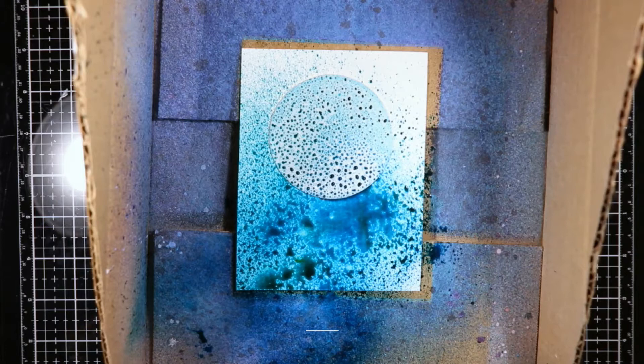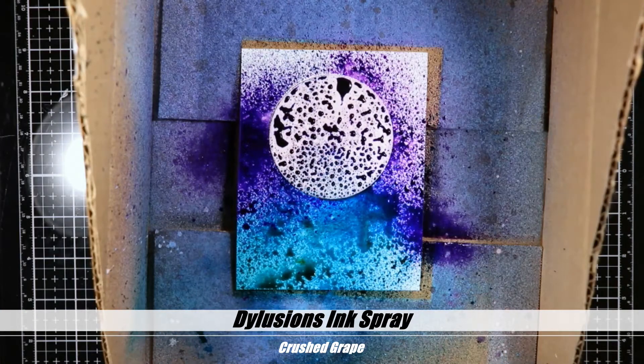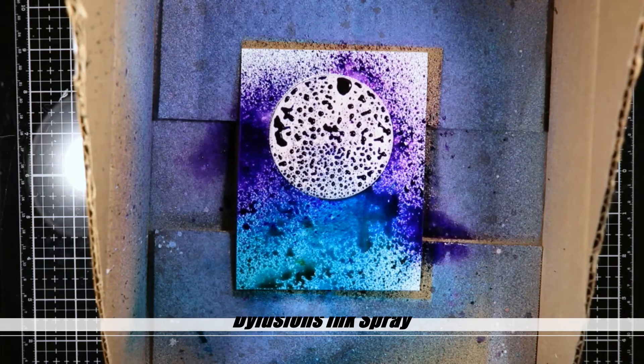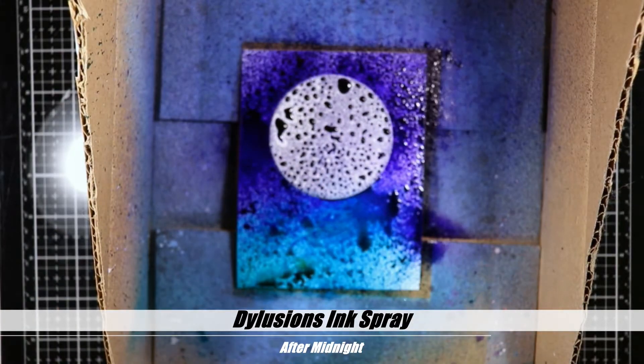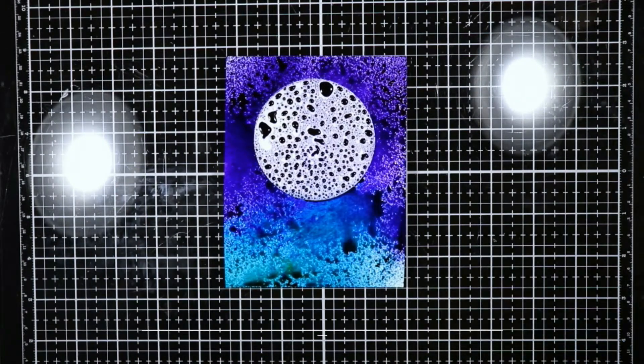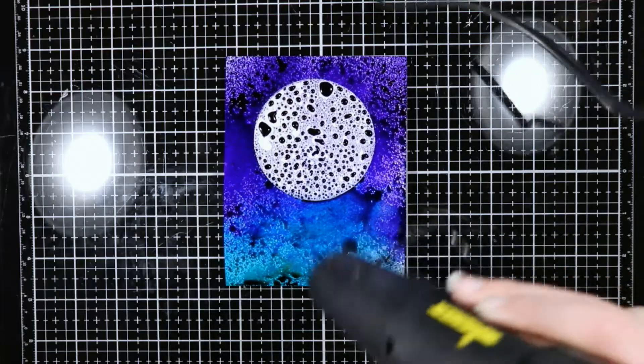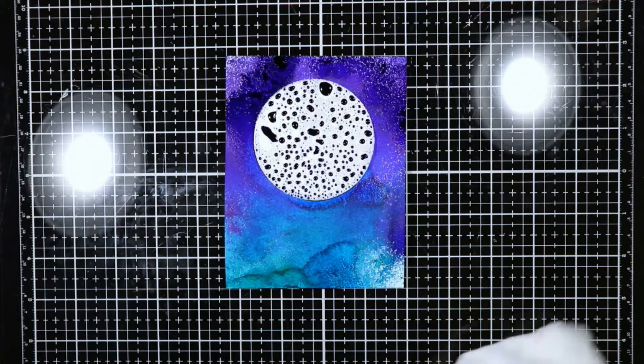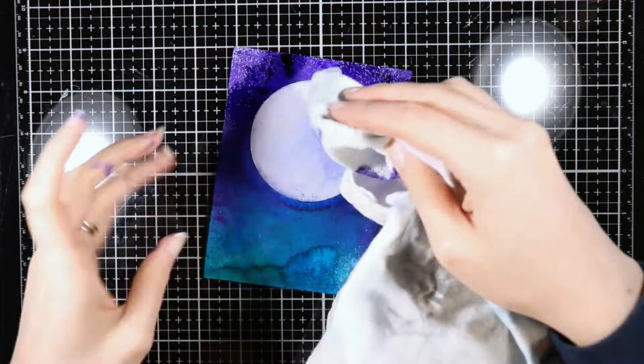Now we're going to move to Calypso teal and spray that on. I picked some colors that reminded me of winter, so we're going to use some crushed grape here, and then some after midnight, which is like a navy blue or dark blue. I'm just going to remove it from my spray box here. Sorry about the bright light shining off my glass mat. Then I just dried the background.